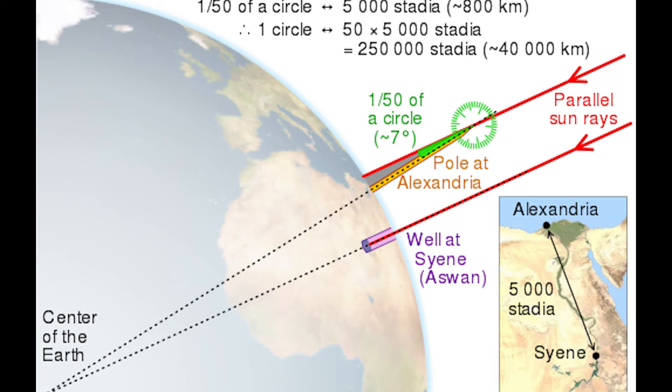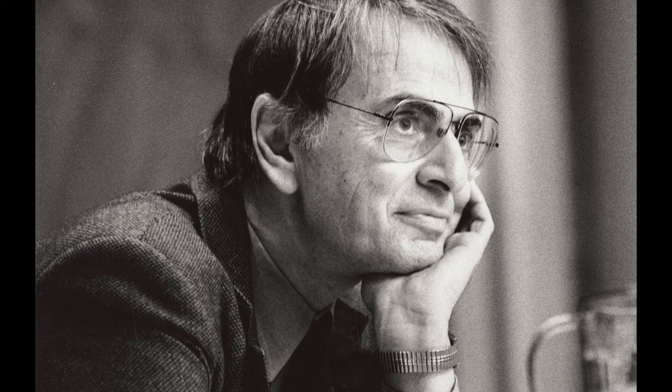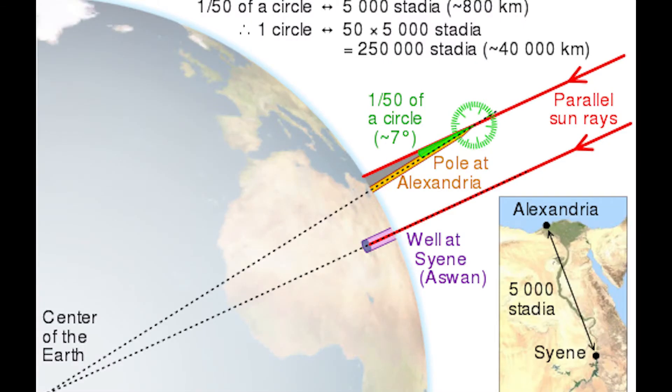So in his calculations, the distance between Alexandria and Syene was 5000 stadia, and Carl Sagan famously said that he paid a man to walk the distance and measure it. The parallel beams coming from the Sun are the red ones.